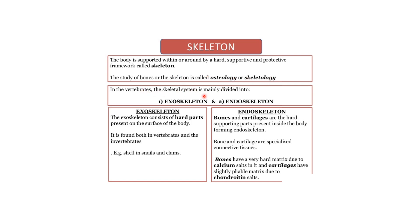In vertebrates, the skeleton is mainly divided into two types: exoskeleton and endoskeleton. The exoskeleton consists of hard parts present on the surface of the body; it is found in vertebrates and invertebrates both — for example, the shell in a snail. The endoskeleton is present inside the body; bones and cartilage are the hard supporting parts forming the endoskeleton. Bones have a hard matrix due to calcium salts, and cartilage has a slightly flexible matrix due to chondrocytes.